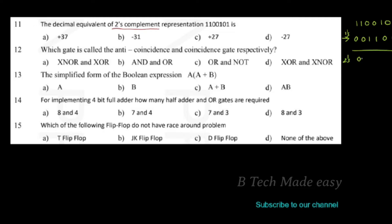The two's complement is: 0, 0, 1, 1, 0, 1, 1. This is the binary representation.